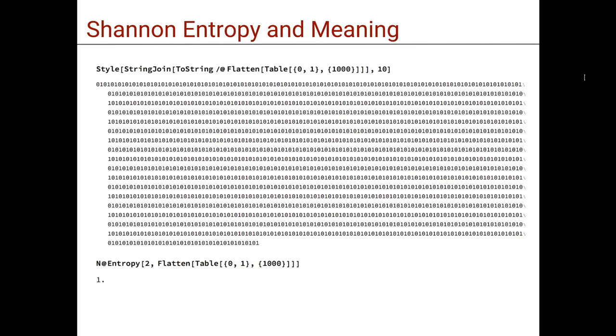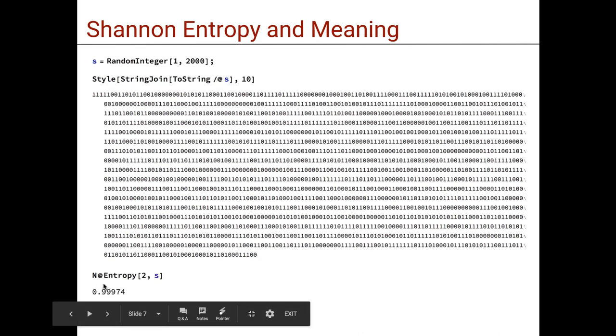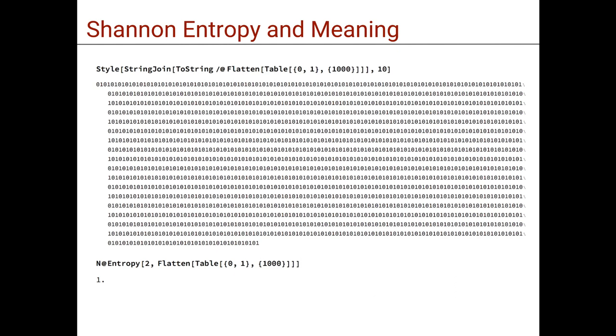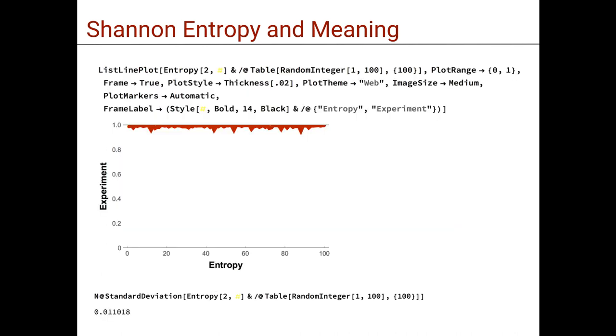This is because taking single bits as microstates or units for the application of entropy, these sequences look equally diverse to entropy. They have about the same number of ones and zeros. So, we would need to take as microstate two bits in order to have entropy to retrieve a low entropy value for the sequence of zero, one, repeated a thousand times, as one would intuitively have expected, given that the second sequence looks ordered and not random.